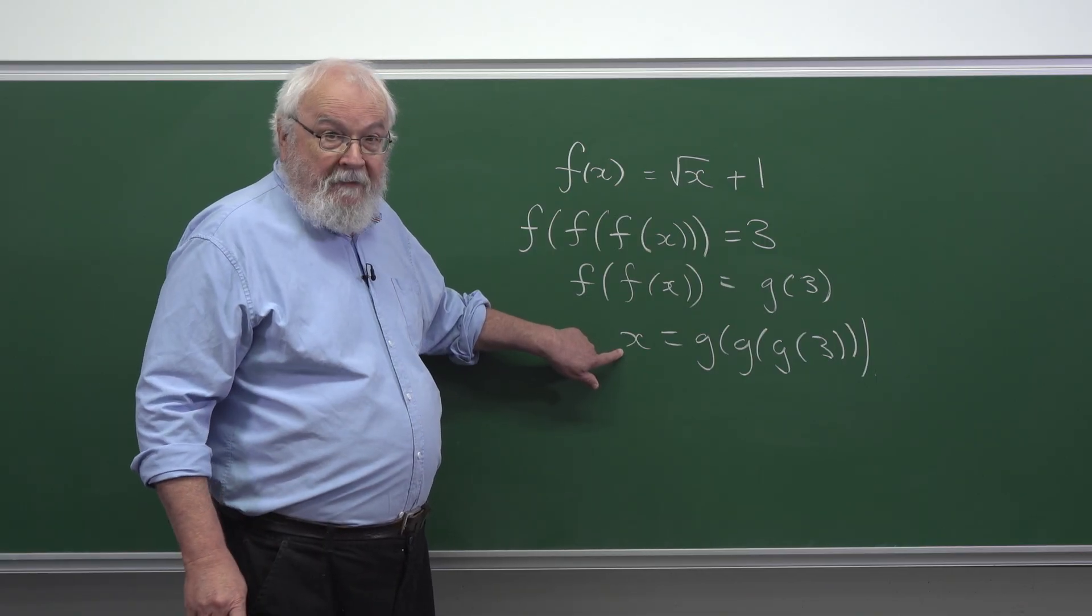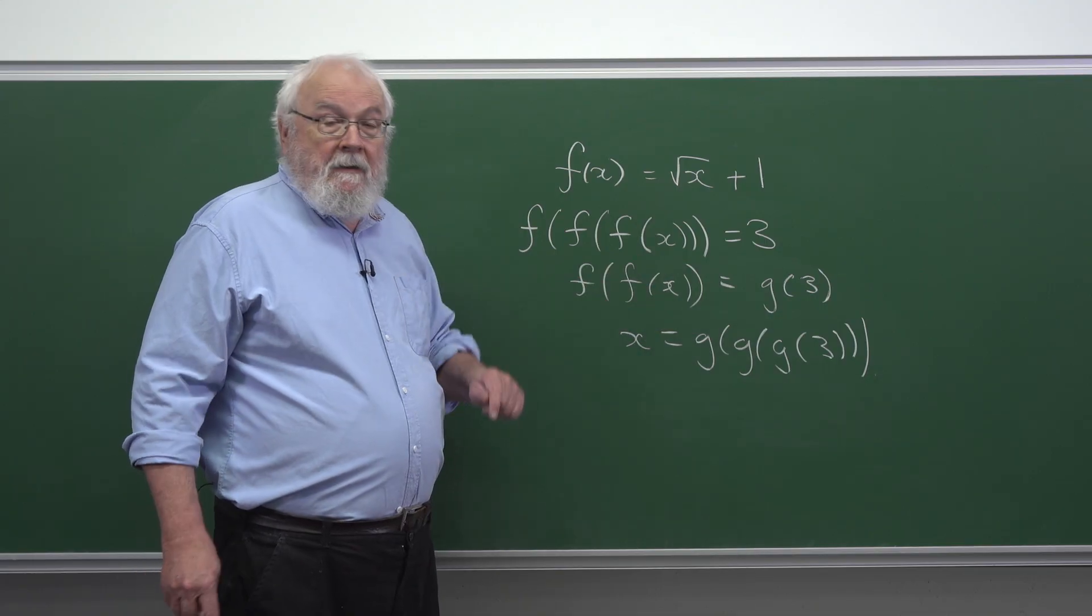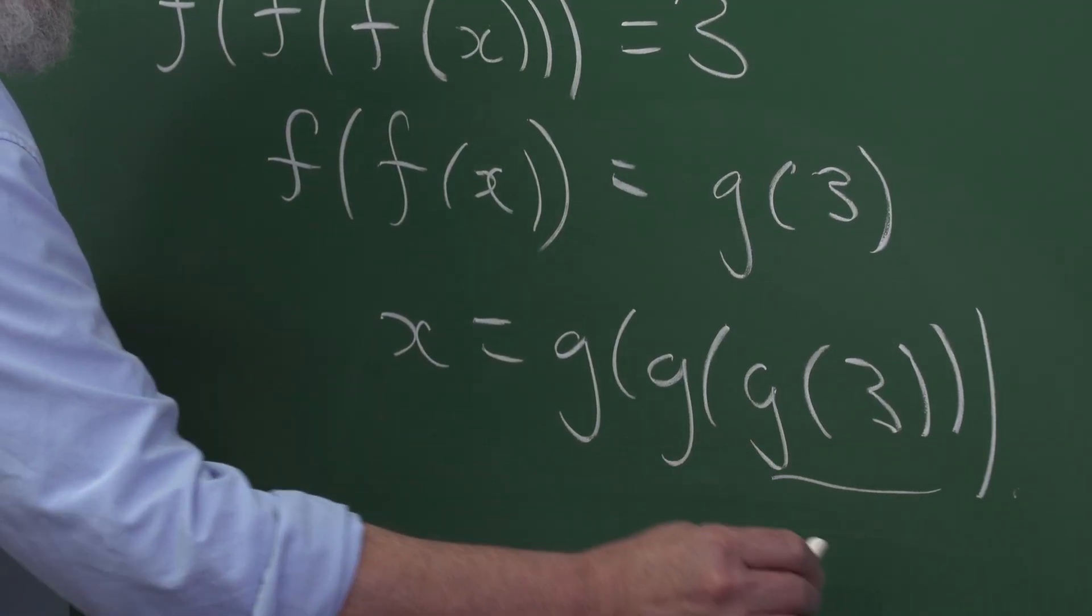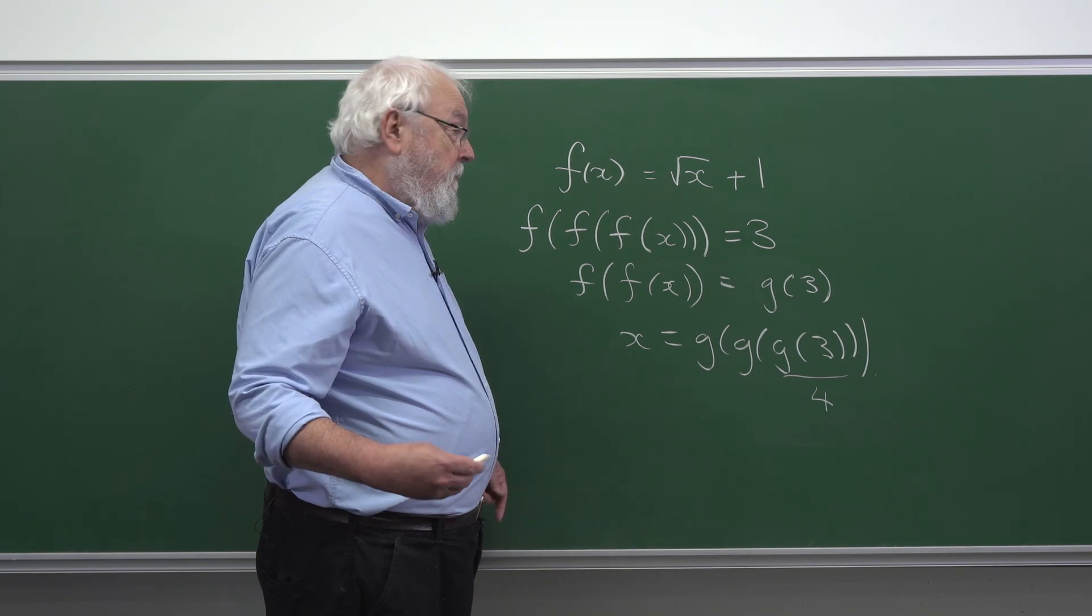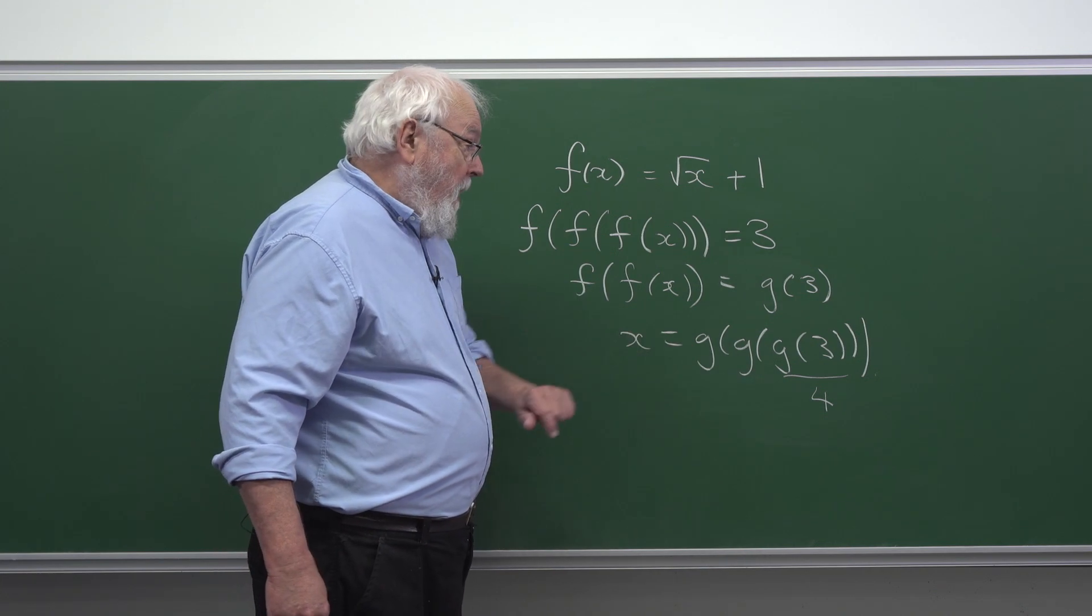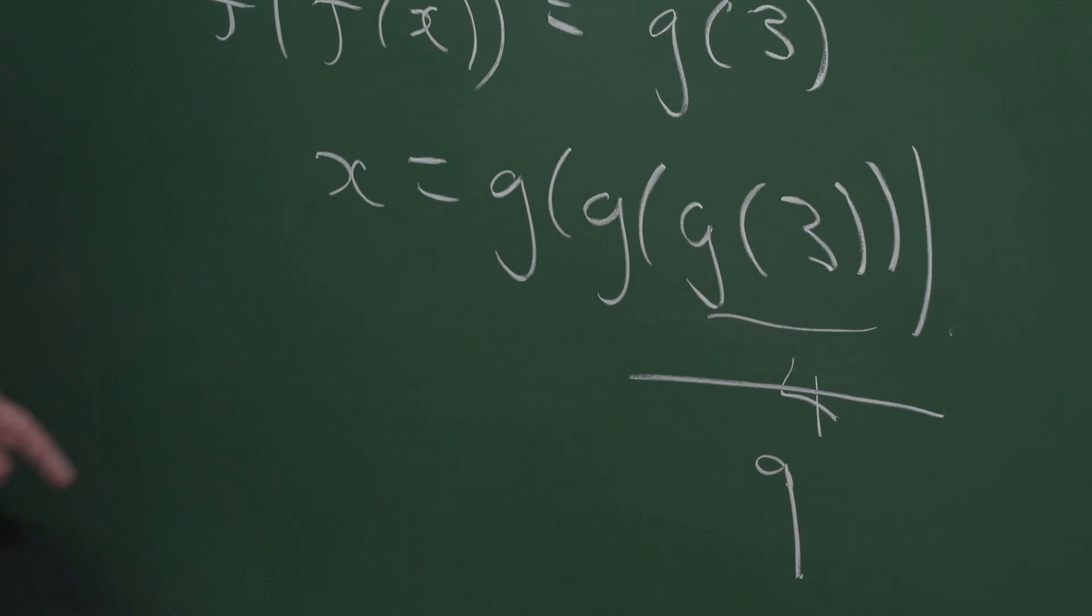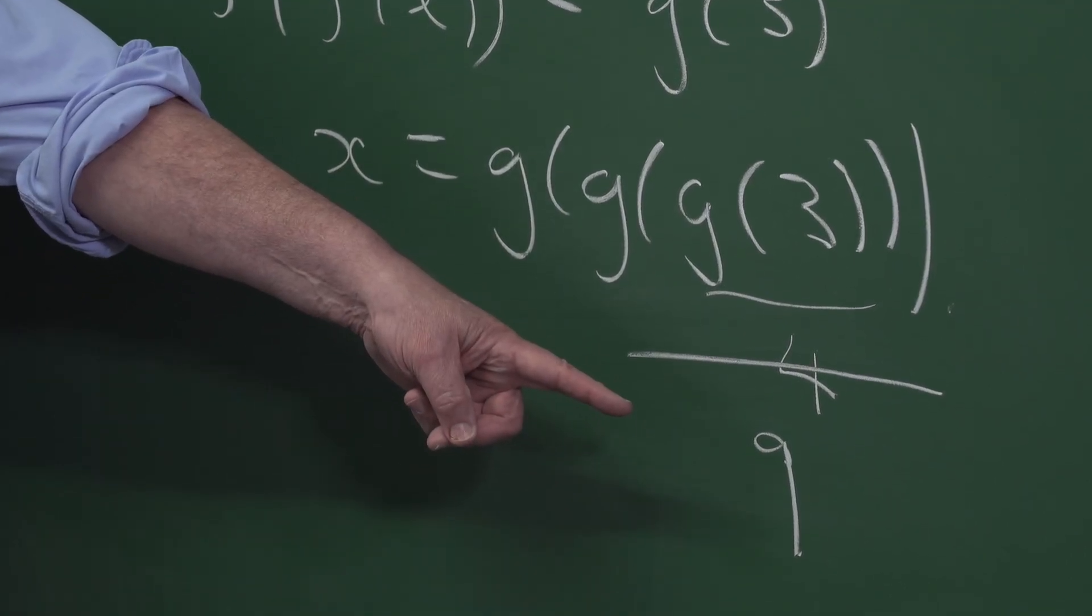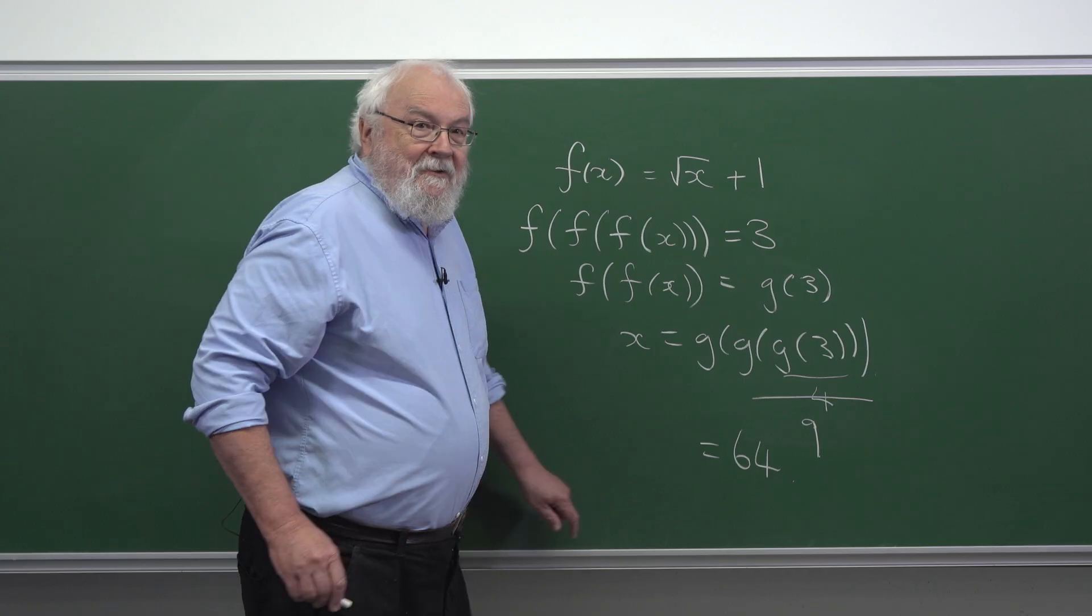So this is a formula for our answer. Remembering that g of g of something is obtained by subtract 1 and then square, g of 3 is 4. So that's 3 minus 1 is 2, square it, we get 4. Now do it again. We take 4, we subtract 1 and square, we get 9. And finally, g of 9, we subtract 1 and square, we get the answer 64. So that's the correct answer.